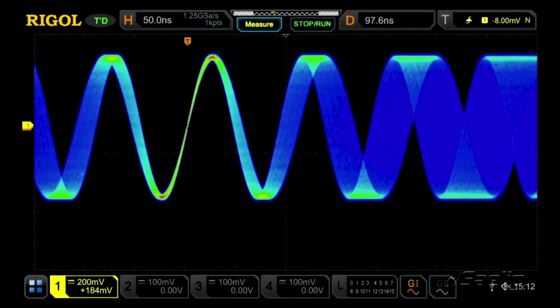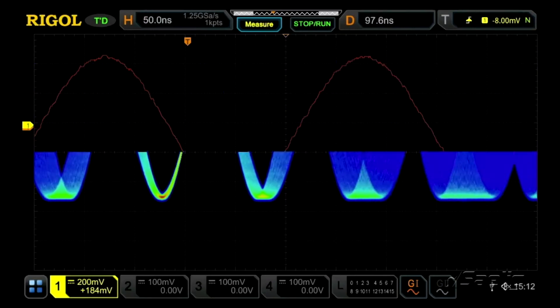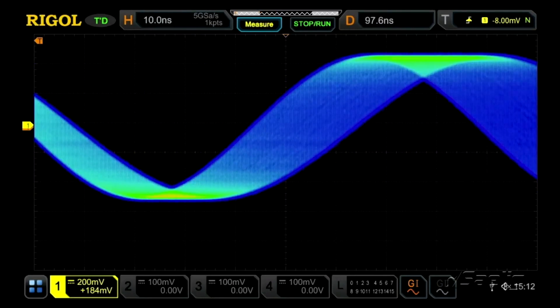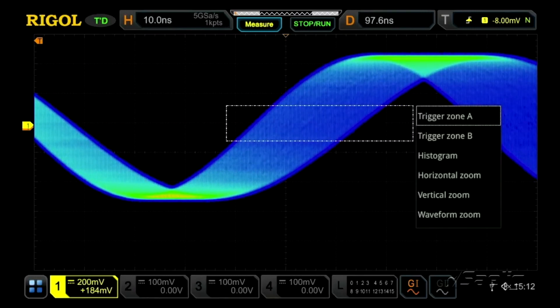As an example, let's look at this signal that has some frequency modulation on it. If we need to characterize that modulation, we can zoom in and then use the touch screen to create an area for our histogram.